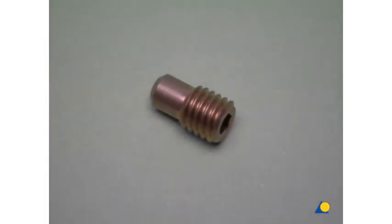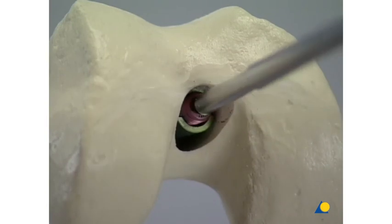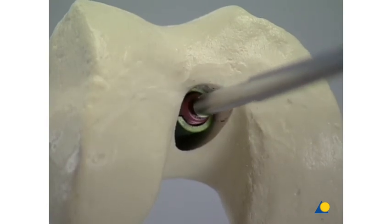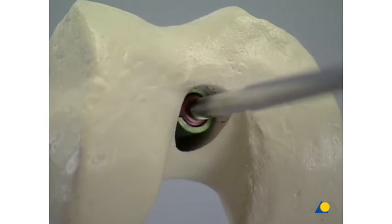Now, the end cap must be inserted. As it fulfills three functions, its use is mandatory. It prevents bone in growth into the nail, locks the spiral blade at a stable angle, and prevents it from loosening. Using the screwdriver, the end cap is aligned with the longitudinal axis of the nail and screwed in tightly.